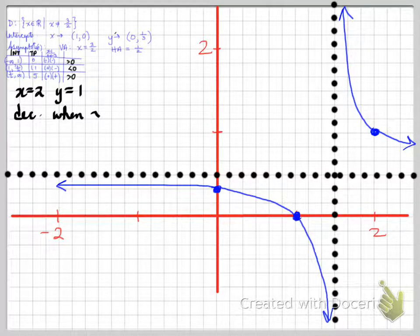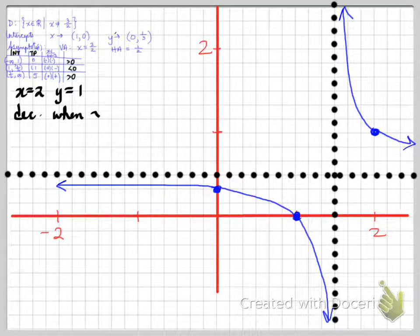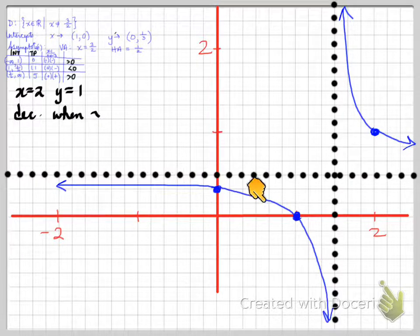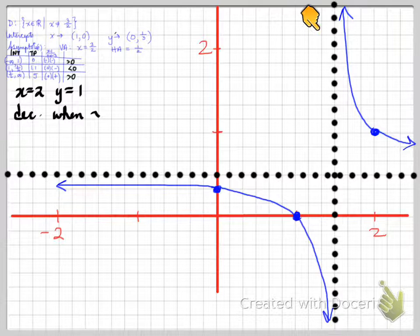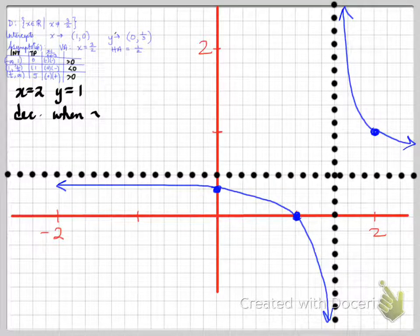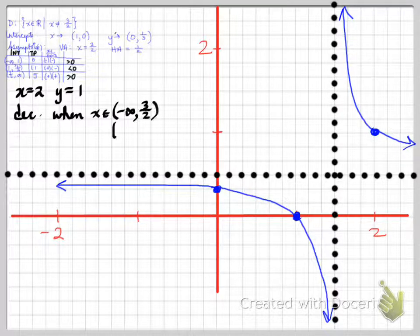This function is decreasing. It continuously decreases from negative infinity up to x = 3/2, and continues to decrease from x = 3/2 all the way to positive infinity. So the function is decreasing on the intervals x ∈ (−∞, 3/2) and x ∈ (3/2, +∞).